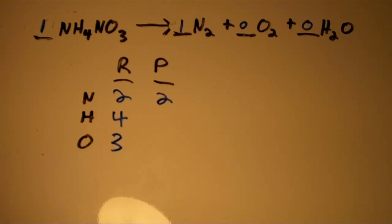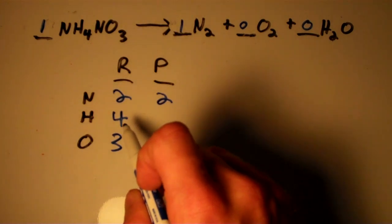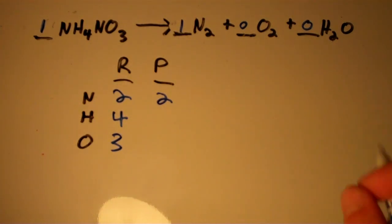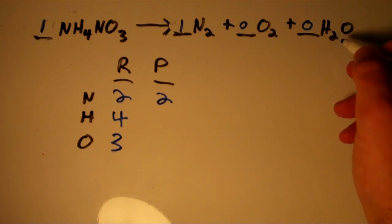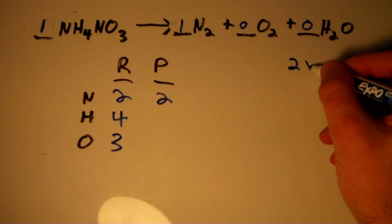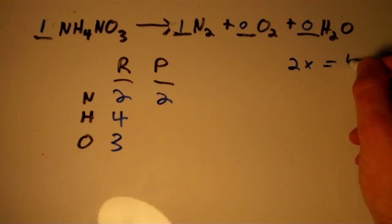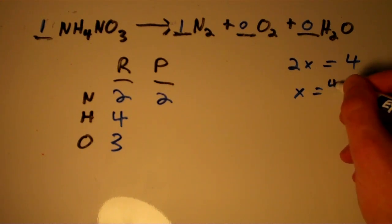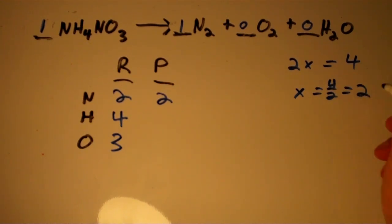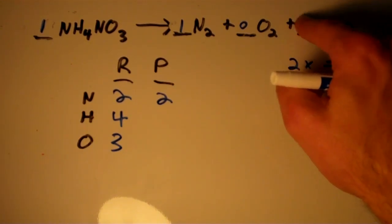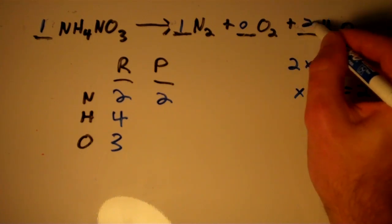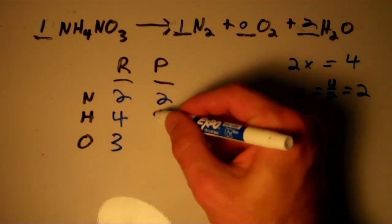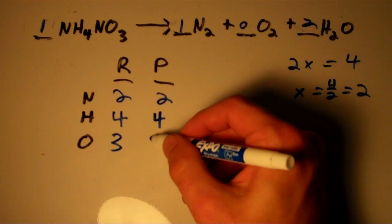Now I'm going to balance hydrogen. We have four on the reactant side, so we need four on the product side. For every water molecule, there's two hydrogens, so I'm going to have two times something equals four. X is equal to four over two or simply two. So I'm going to put a two here. That gives us four hydrogens and two oxygens.